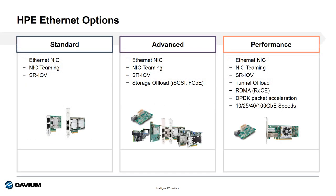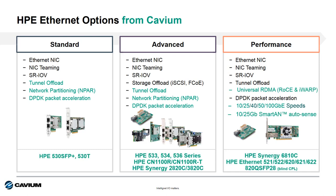At HPE they offer adapters in three different flavors: standard, advanced, and performance. When we get a normal adapter from HPE, you get the features listed on the table here. When you get an HPE adapter based on Kavium technology, you get some extra features and capabilities. For the standard and advanced products, you get tunnel offload, NIC partitioning, DPDK, and small packet acceleration in all of our adapters.